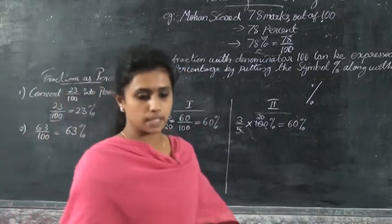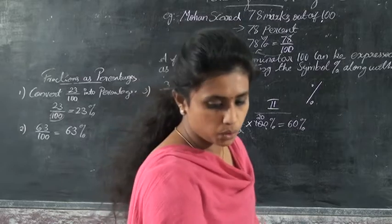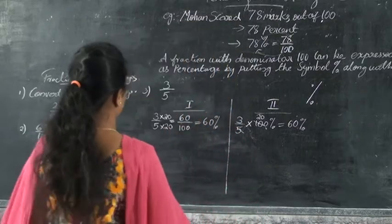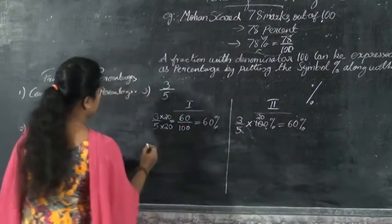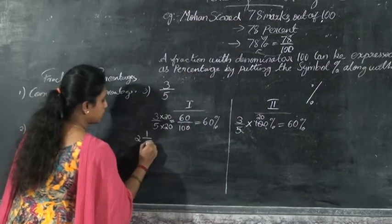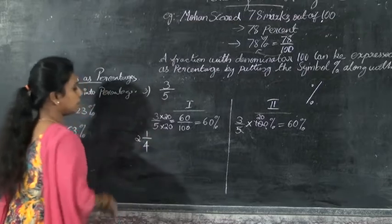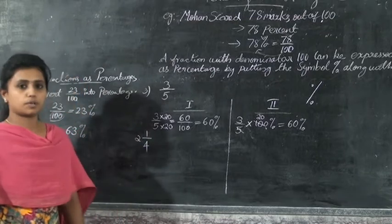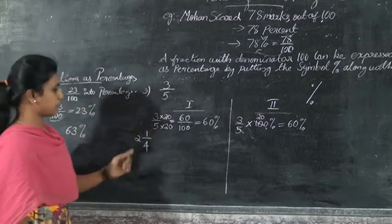Now I will show you one more question. The fraction is 2 and 1 by 4 — that is, 2¼. This is a mixed fraction.